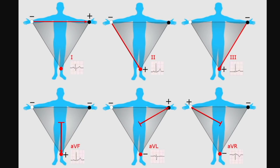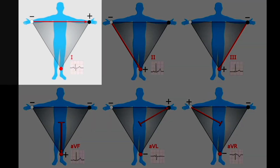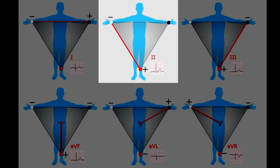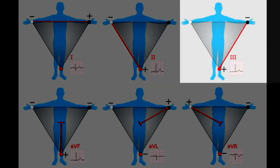What you're seeing looks complicated, but it's quite simple. In the upper left-hand corner, we have a red arrow going from the right arm to the left arm — that's lead one. It's got a specific viewpoint of the electrical conduction in the heart. If we look from a different angle, lead two goes from the right arm down to the left foot and looks slightly different. Lead three goes from the left arm down to the left foot, and again has a slightly different unique look.